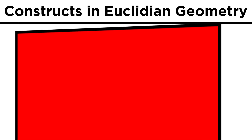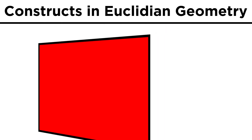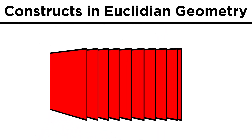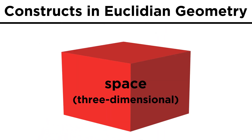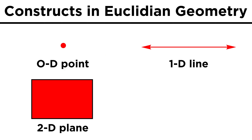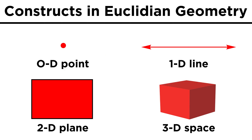And then if we string an infinite number of planes in either direction, we get three-dimensional space. Point, line, plane, space — zero, one, two, and three dimensions.